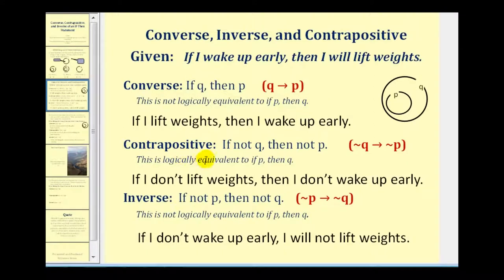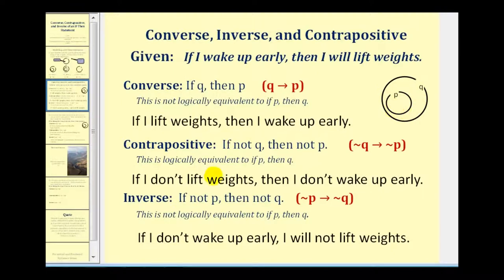The contrapositive would be if not Q, then not P. So we interchange the hypothesis and conclusion and also negate them. The statement would be: if I don't lift weights, then I don't wake up early. Looking at the Venn diagram, if I don't lift weights, that means I'm not inside Q, or I am outside Q. So if I'm outside Q, then I don't wake up early, which means I'm outside P. So if I'm outside Q, I'm guaranteed to be outside P. Therefore, this statement is logically equivalent to if P then Q.